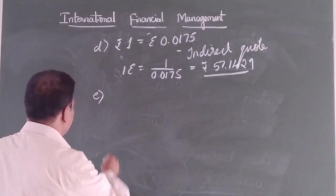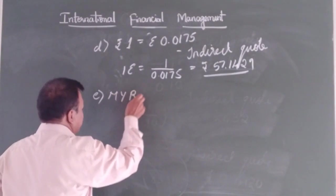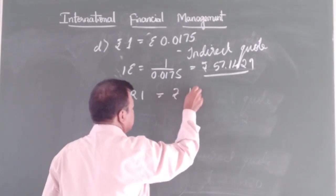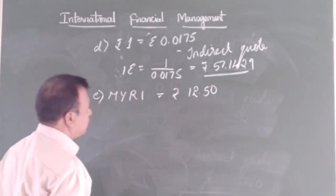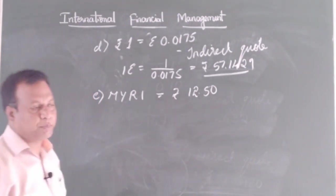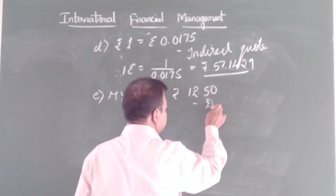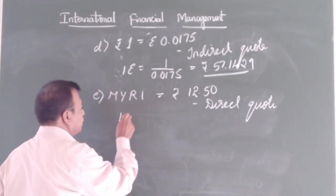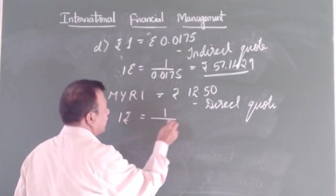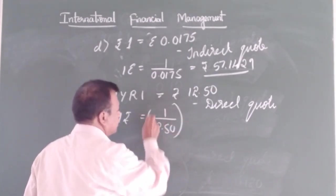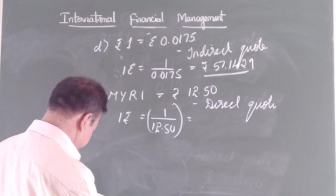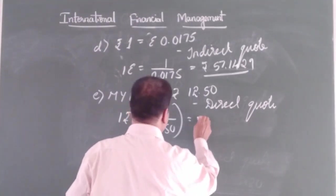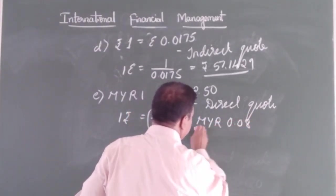The fifth one is: Malaysian ringgit 1 is equal to rupees 12.50. This is expressed in terms of 1 unit of foreign currency, so it has to be a direct quote. The corresponding indirect quote is: 1 rupee is equal to 1 divided by 12.50, which gives us Malaysian ringgit 0.08.